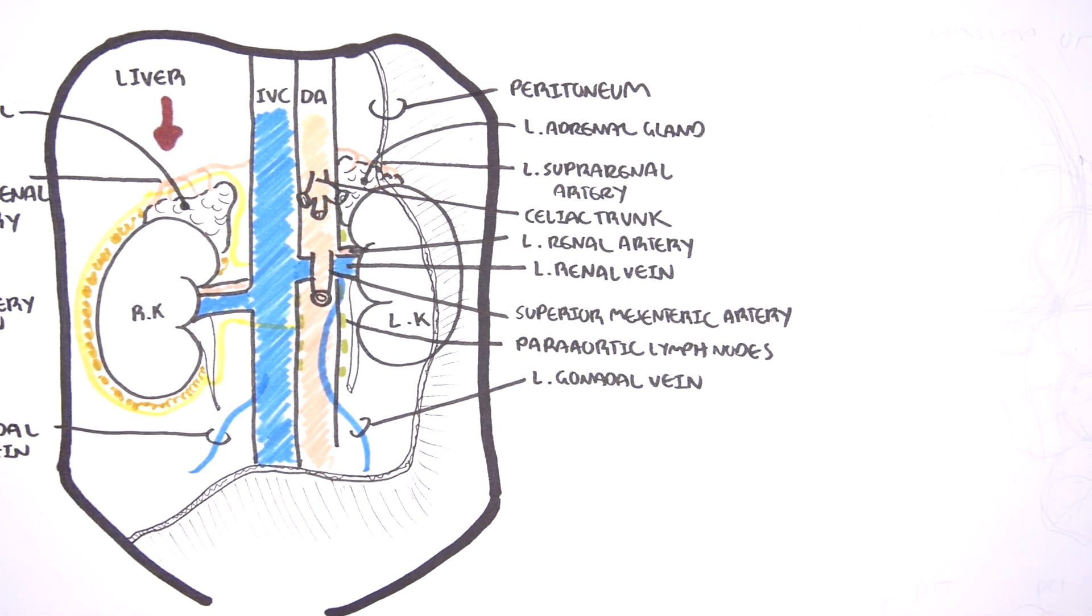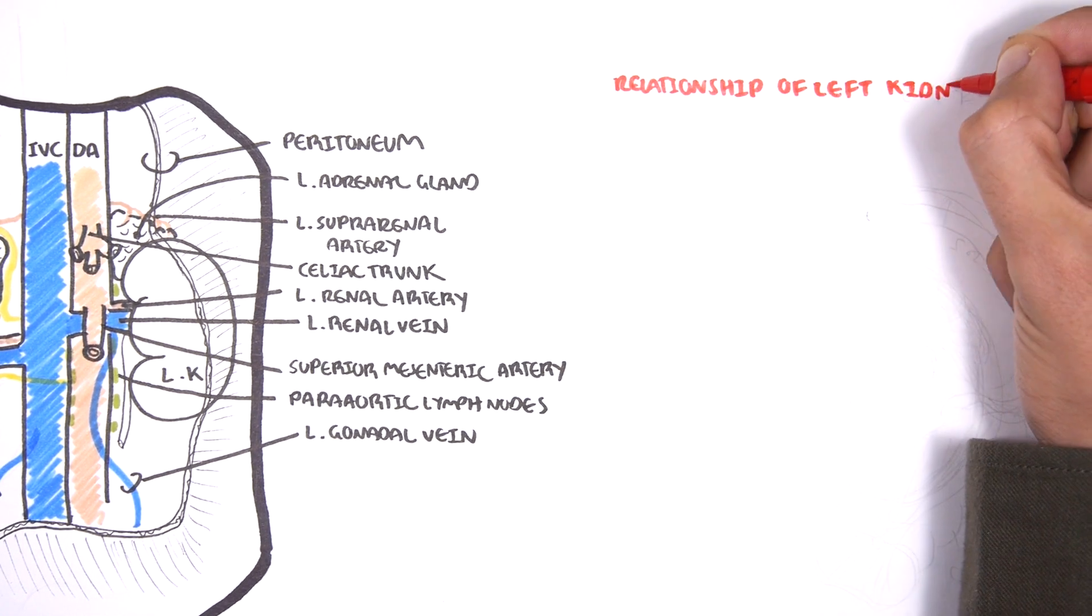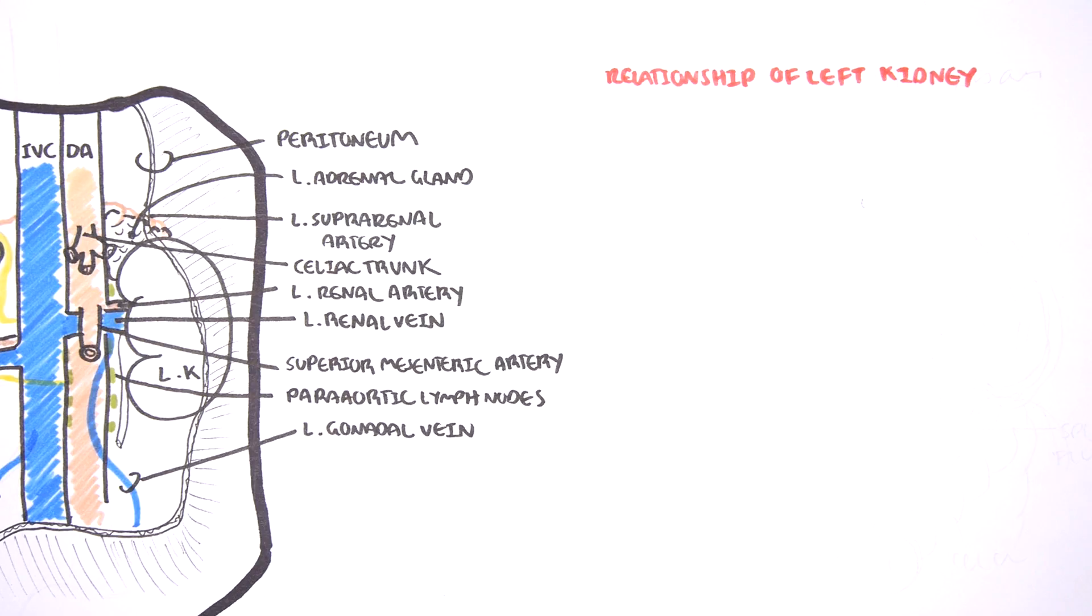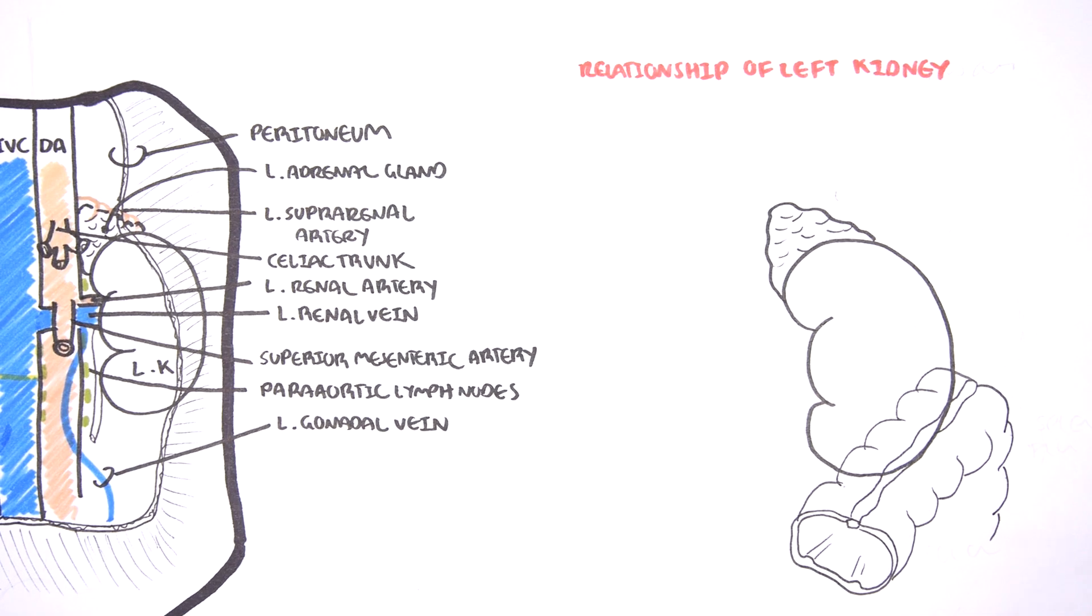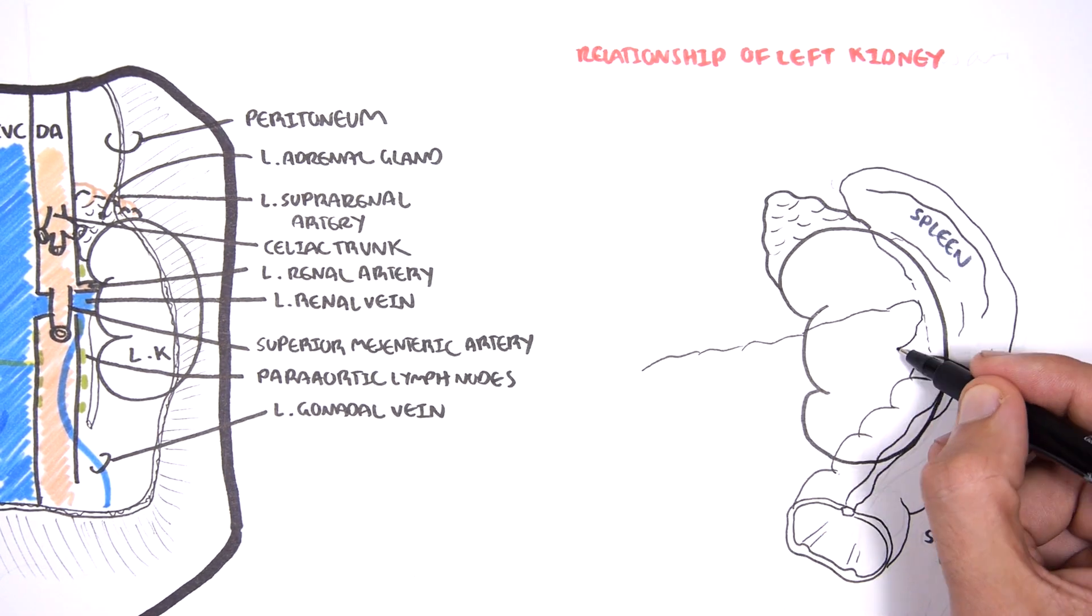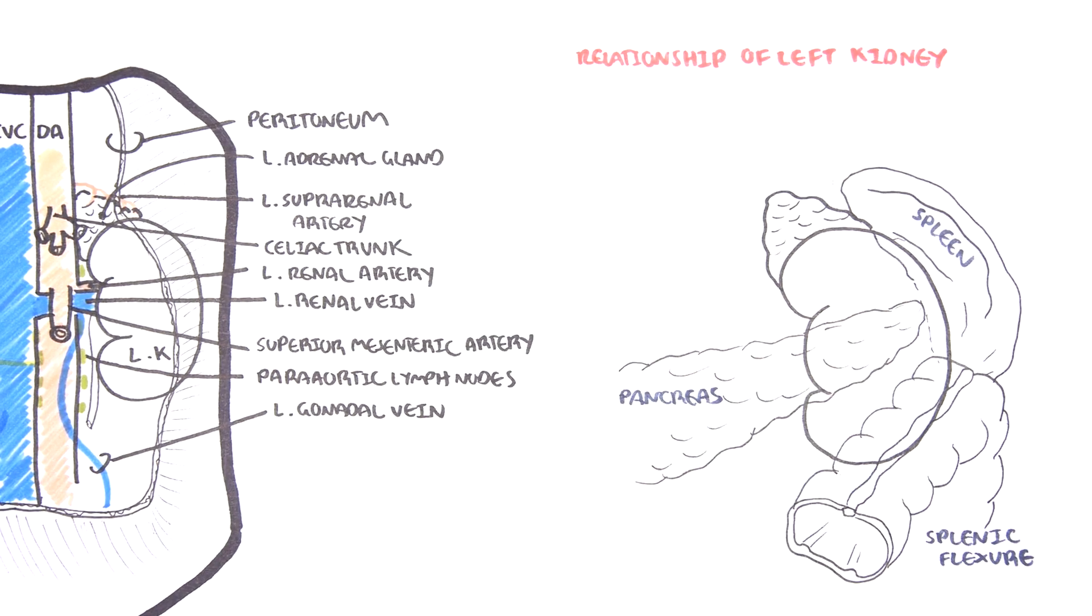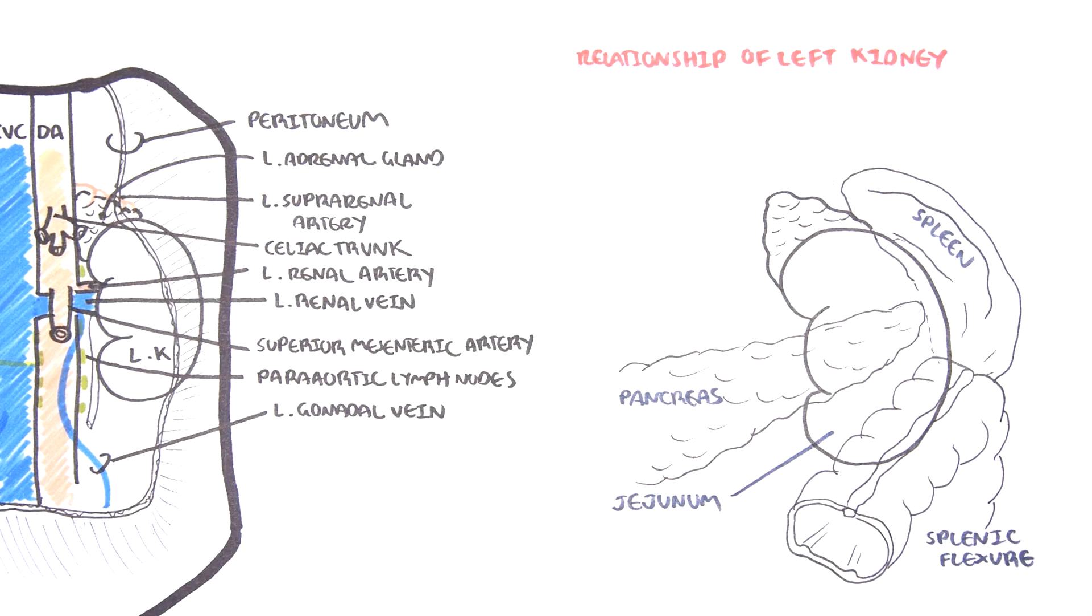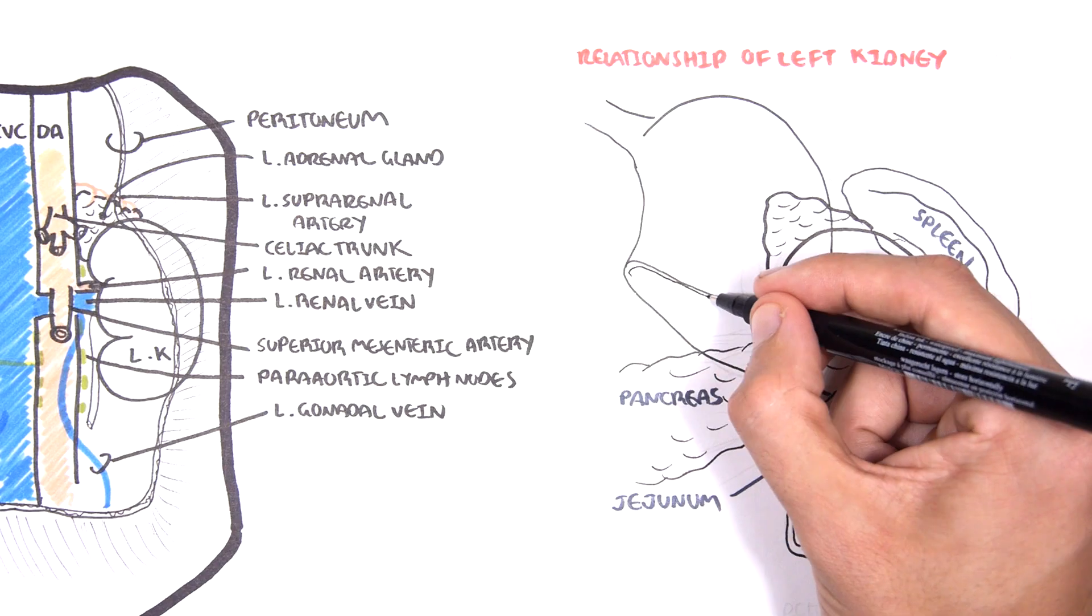Let's take a look at the relationship of the left kidney which is a bit more complicated and congested. The colon's splenic flexure sits here. The spleen is slightly above the left kidney. The tail of the pancreas tickles the spleen. The jejunum lays here and the stomach covers the top part of the left kidney.